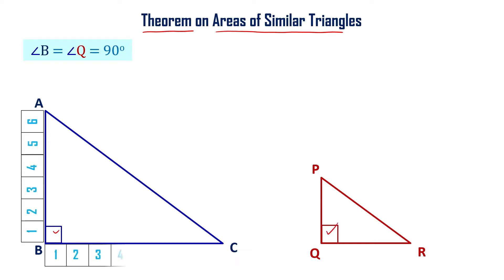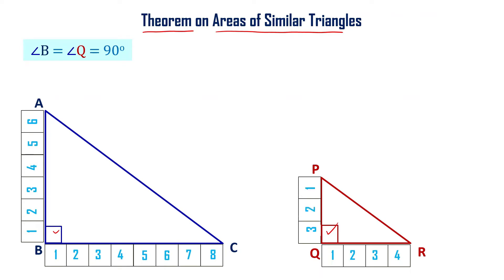Now take the measure of sides including these 90 degree angles. Angle B includes sides AB and BC. Also take measures of PQ and QR, because these two sides contain angle Q, which is a 90 degree angle. These two sides are containing it, that's why we are taking measures of these sides. Now let's see whether they are proportional or not.